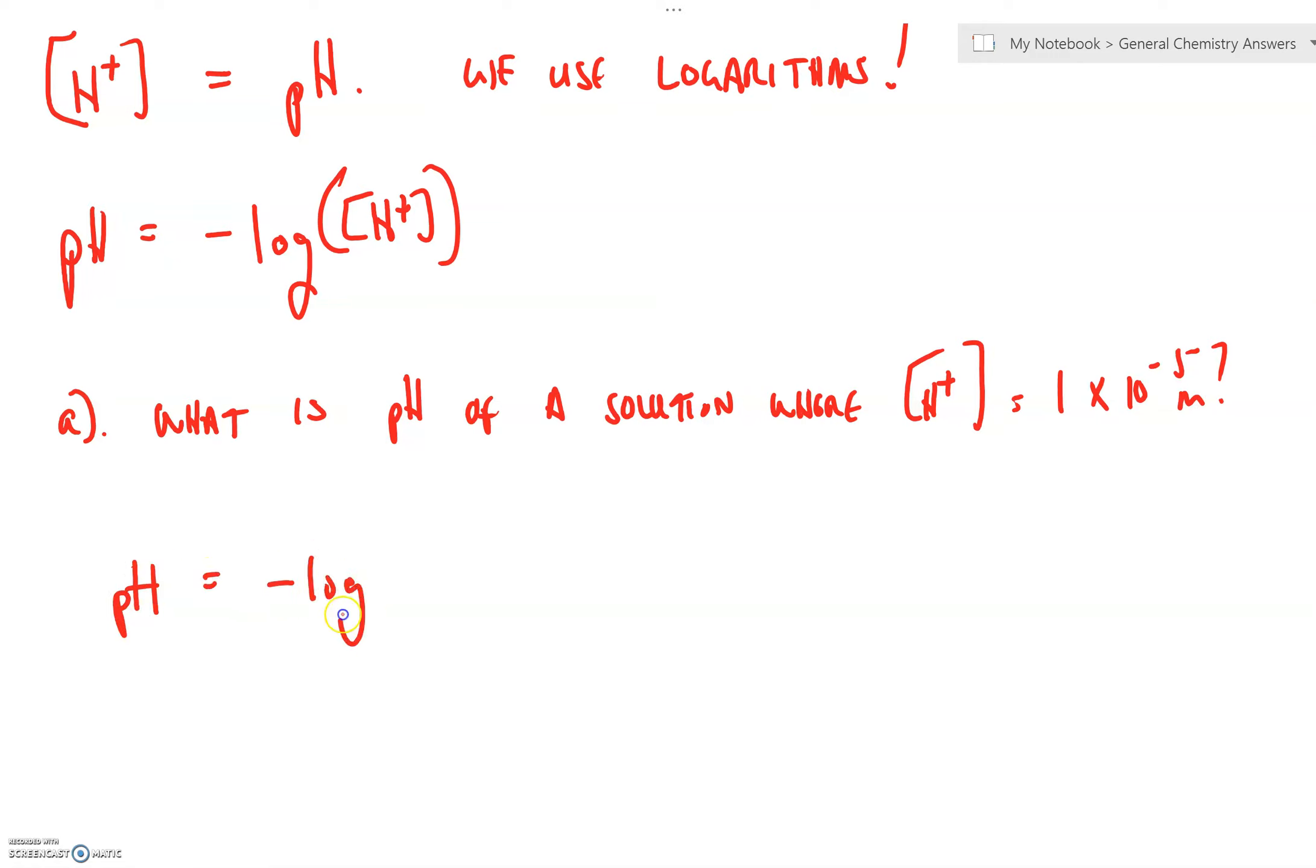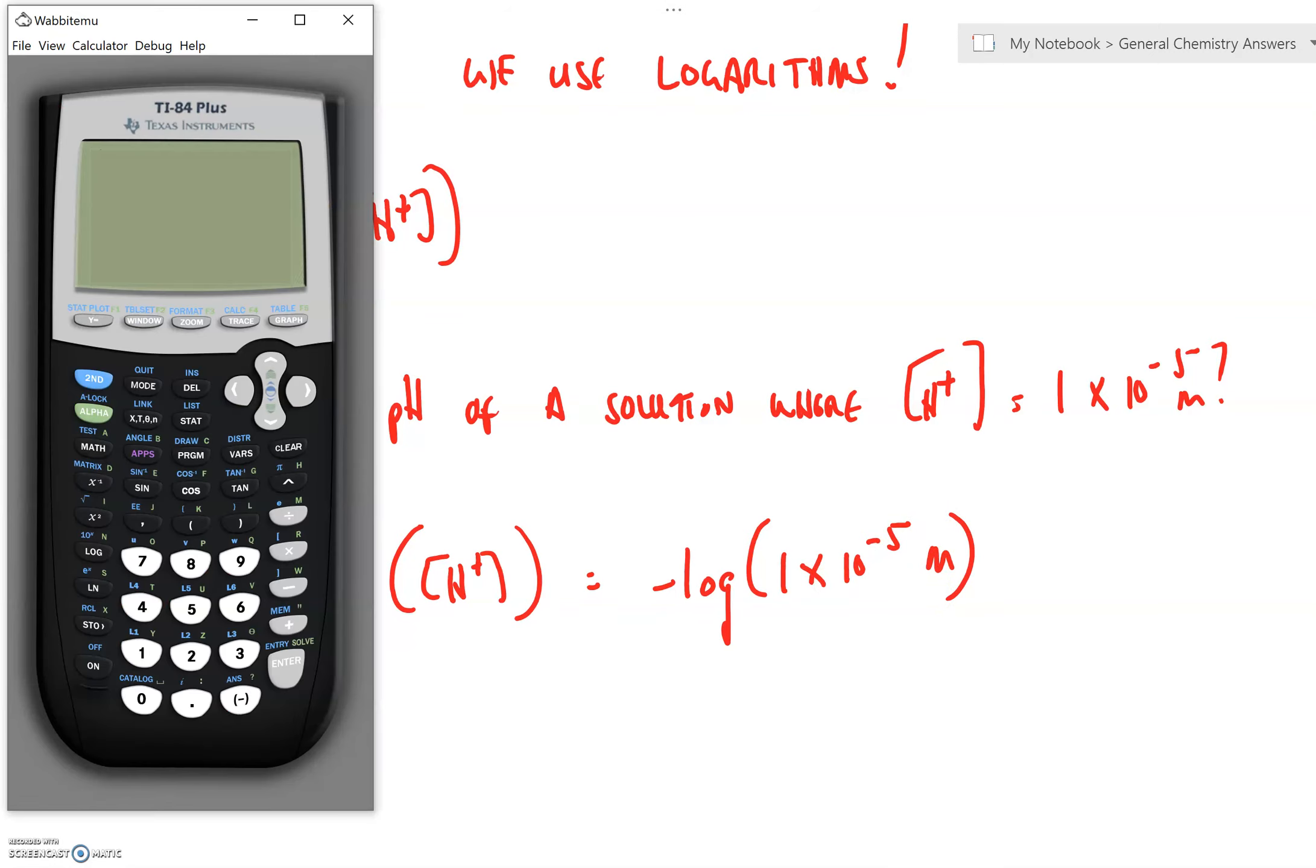We're going to plug it right into this equation. pH is equal to negative log of H+. And since in this particular example, it gives it to you, we're simply going to say, negative log of 1 times 10 to the negative 5th molar. So, let's bust out your calculator. We're going to say negative log, and it's going to set up the parentheses for us just like this. 1 times 10 to the negative 5th.